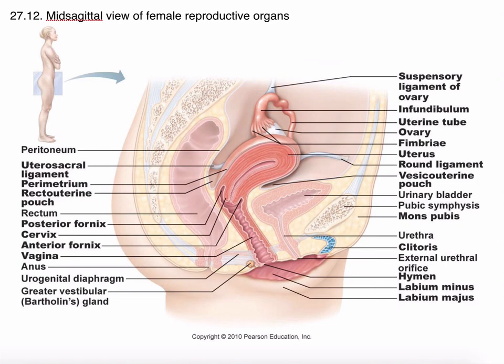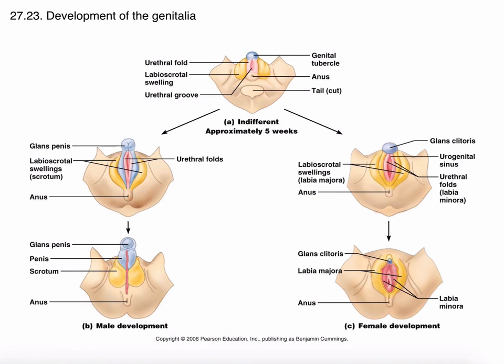There are these two paired roots of the clitoris that extend to attach to the pelvis as well. We don't get to do a whole lot of comparative biology in this class since we only look at one species, but I always think it's interesting to consider how the genitalia differ between the two sexes in normal circumstances, largely because of the hormonal environment they develop in.